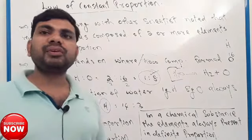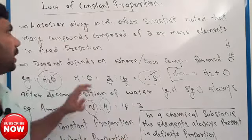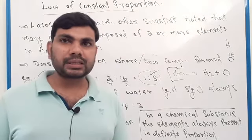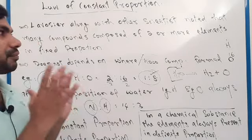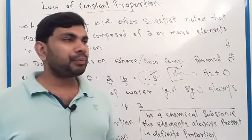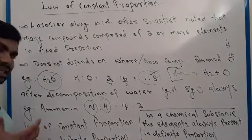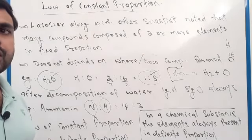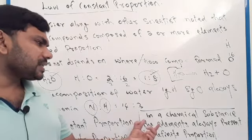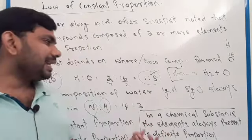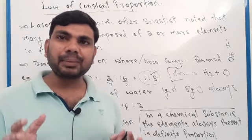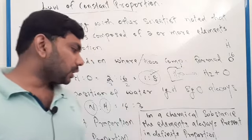These observations helped establish the law of constant proportion, also called the law of definite proportion. Lavoisier and other scientists observed that many compounds contain two or more different elements in a fixed ratio, and this fixed ratio does not depend on how the compounds are formed or their source of preparation.